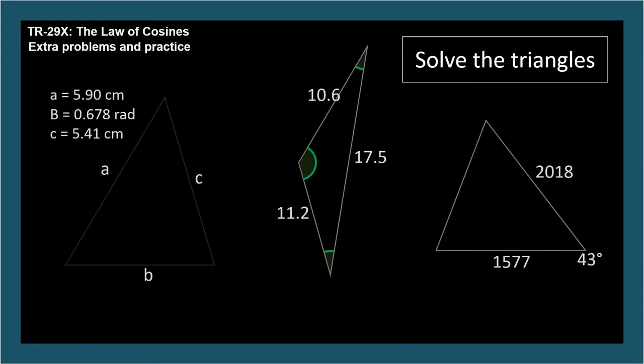For the first triangle, we might need to do a little transcribing, but it turns out we're given two sides and the angle between them. Note that the angle is in radians. With no angle-side opposite pair, we use the law of cosines using the given angle B and its opposite side, lowercase b.